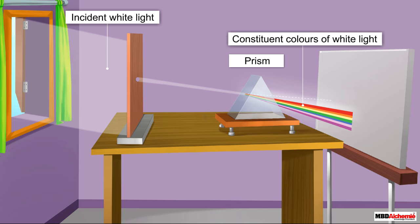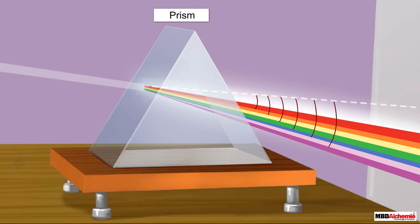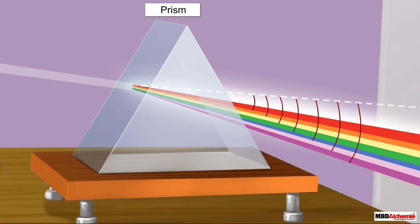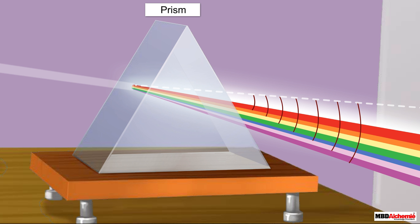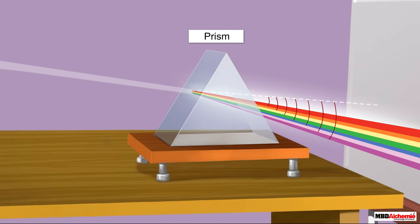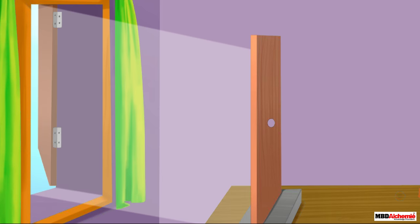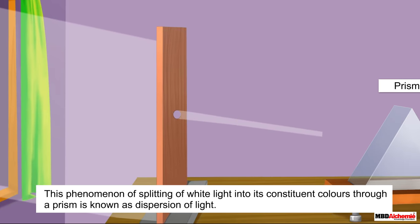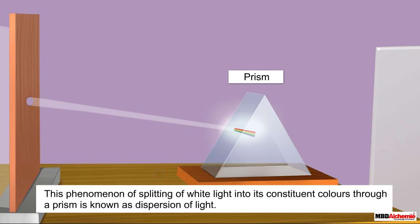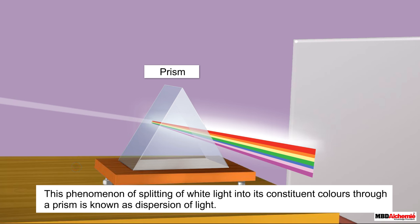The splitting occurs because different colors of the sunlight bend through different angles with respect to the incident ray when they pass through the prism. The red light bends the least while the violet bends the most. Thus the rays of each color emerge along different paths and become distinctly visible, giving us the beautiful band of colors. This phenomenon of splitting of white light into its constituent colors through a prism is known as dispersion of light.